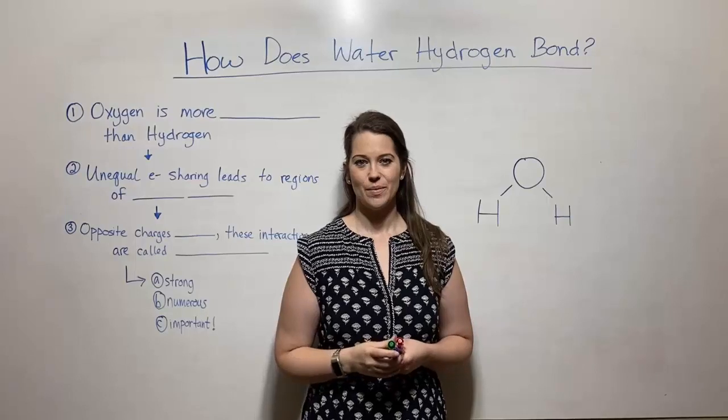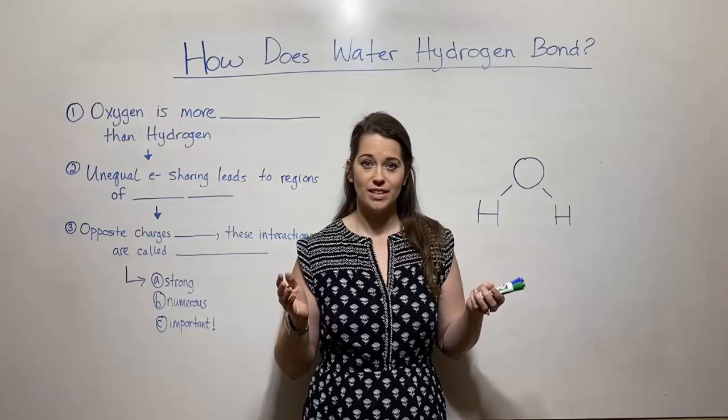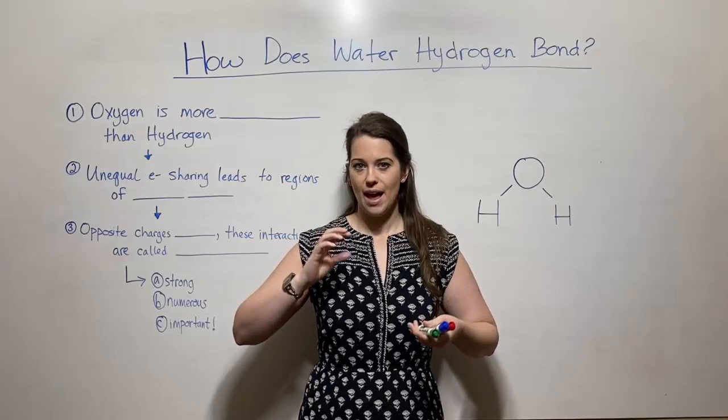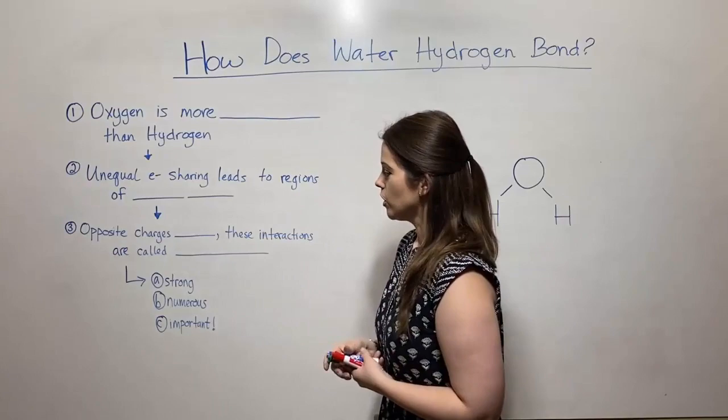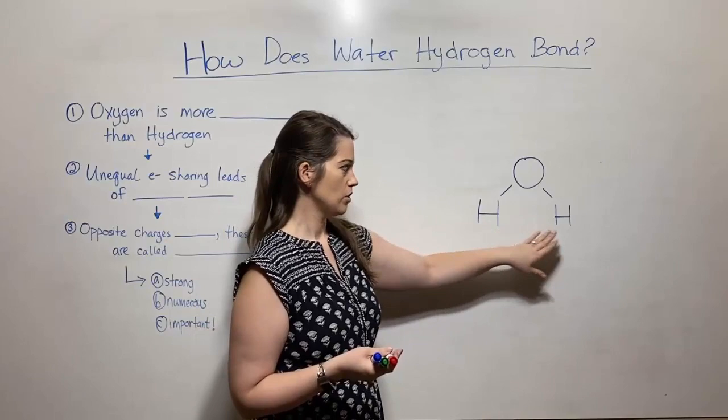Hi everyone and welcome to Biology Professor. Today I'm going to answer the question: how does water hydrogen bond? I'm going to focus on what aspects of water — that molecule — and what's the chemistry behind it that allows hydrogen bonds to exist. First, let's start by looking at water. I've got a water molecule drawn up here. Water is H2O — two hydrogens and one oxygen — and I'm going to be talking a lot about these bonds right here.